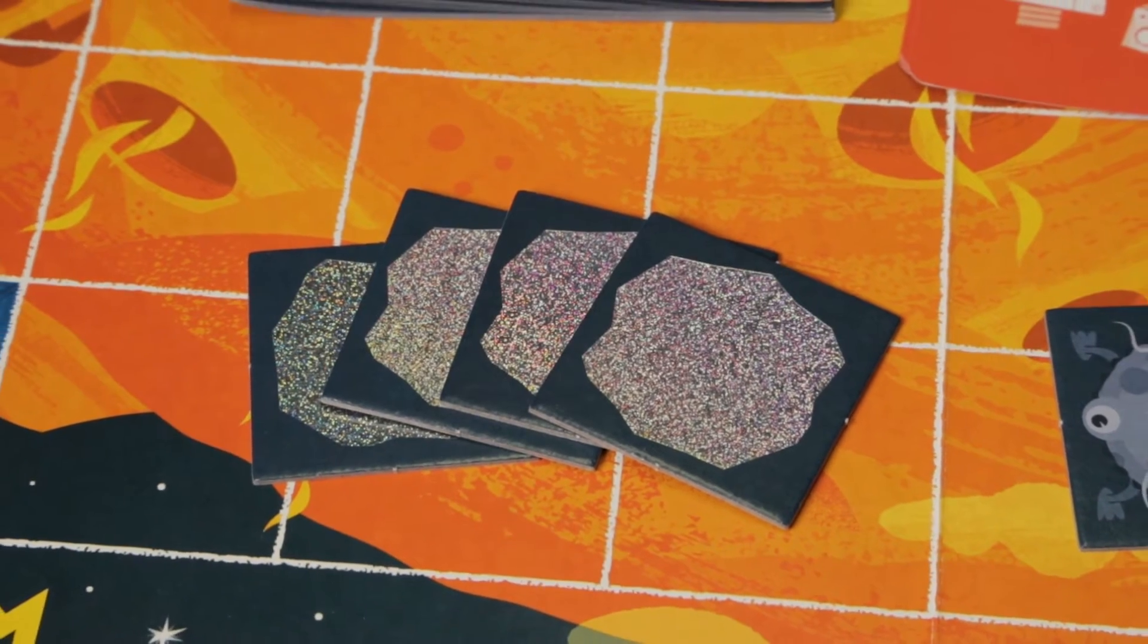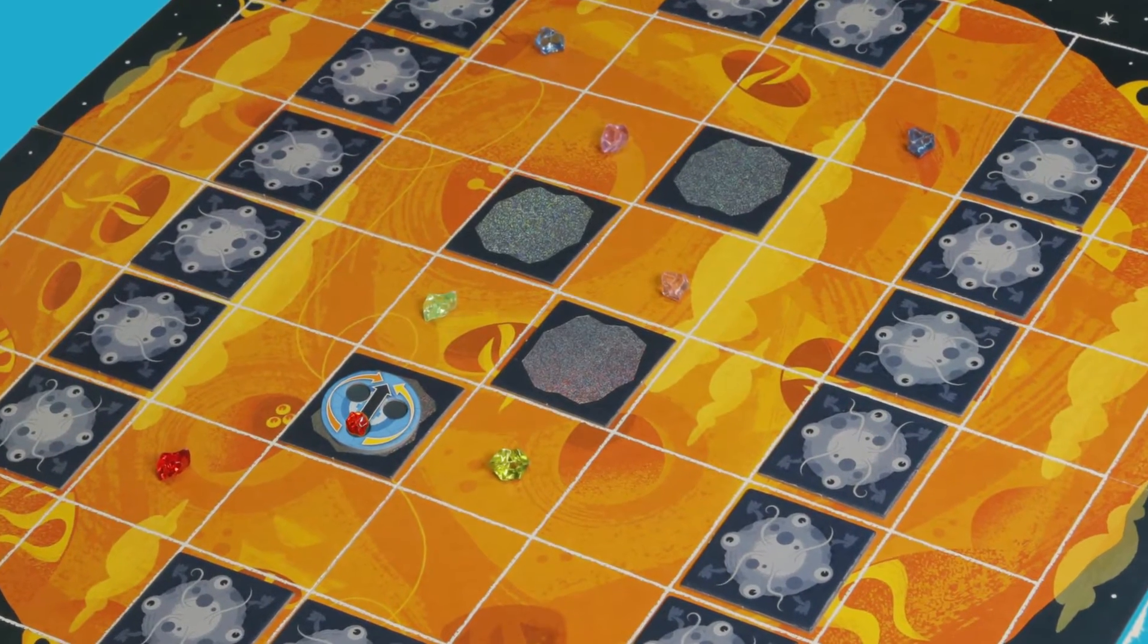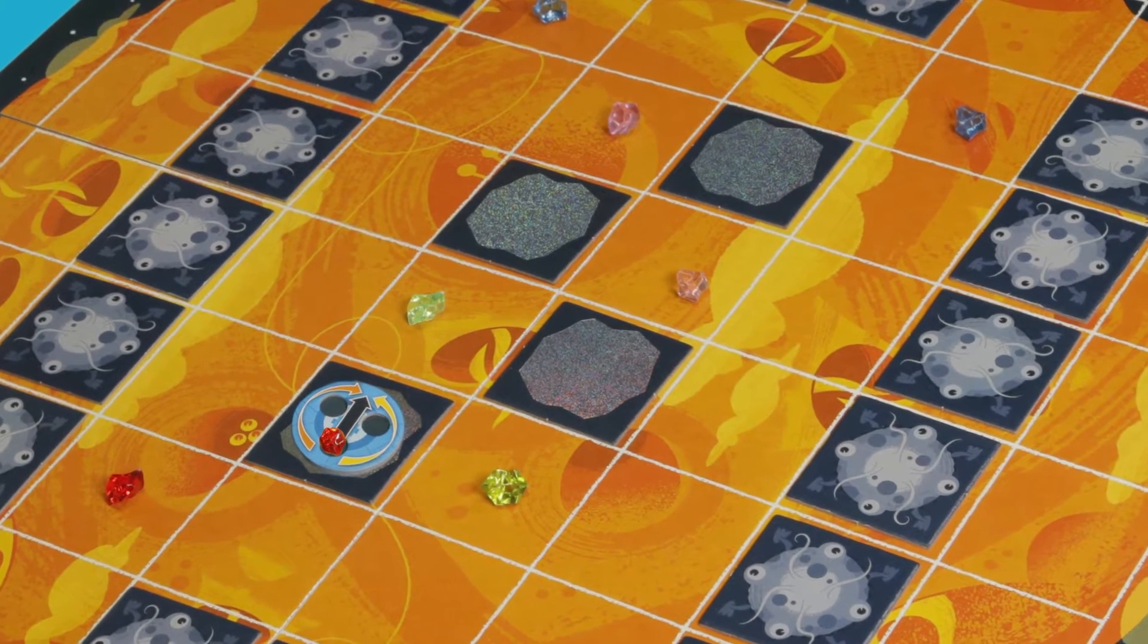The hologram plates provide safe spots for the robots. When a robot is on a hologram plate, it can't be pushed and its diamonds are safe.